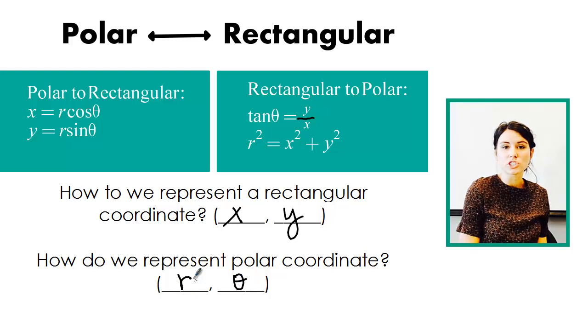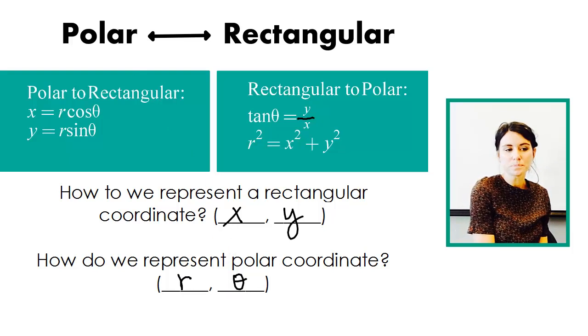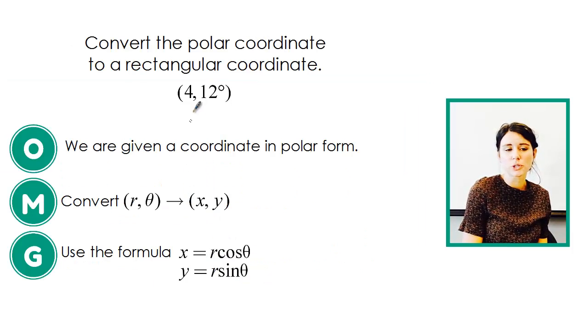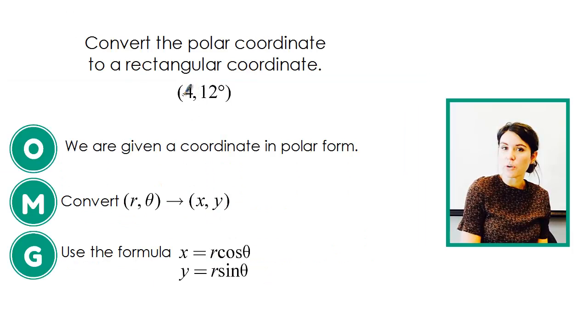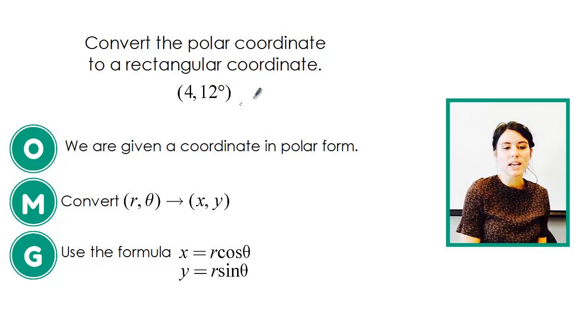r represents your directed distance and theta represents your angle. So what we're trying to do is take the coordinate (4, 12°). So 4 is our directed distance and 12 degrees is our angle. And we're trying to convert that into rectangular.